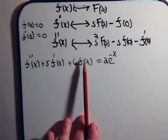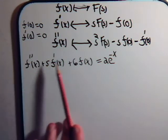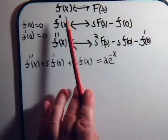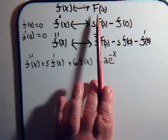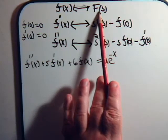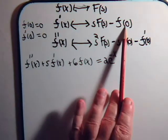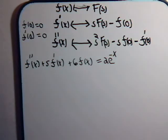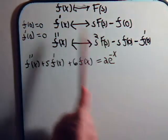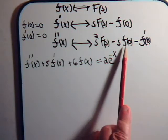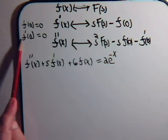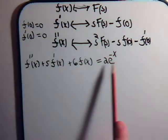To do that using the Laplace transform, the technique is to take the Laplace transform of both sides of the equation. Even though we don't know what f(x) is, the Laplace transform is going to be some function F(s). For the first derivative, that's s times F(s) minus the function evaluated at zero. For the second derivative, the Laplace transform is s squared times F(s), minus s times f(0), minus f'(0). For this problem, f(0) is zero and f'(0) is zero.